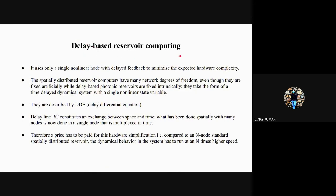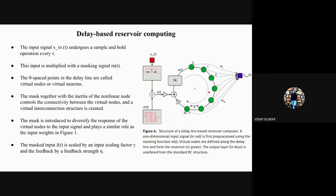The next category is delay-based, which will be the topic of interest. It uses a single nonlinear node with delayed feedback, which minimizes the expected hardware complexity. Spatially distributed reservoir computers have many network degrees of freedom—the n-dimensional n cross n matrix of the reservoir. While these are fixed intrinsically, they take the form of delayed dynamical systems with a single nonlinear state variable. One neuron will be going into a circle and a delayed feedback will be given to it.